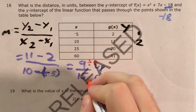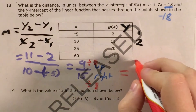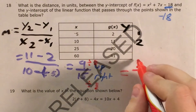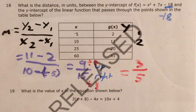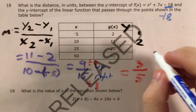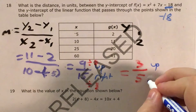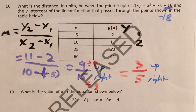Divide by 3 and divide by 3: 9 divided by 3 is 3, 15 divided by 3 is 5. So that means that if I'm going 9 up for every 15 that I'm going right, I can also say that I'm going 3 up for every 5 that I'm going right.